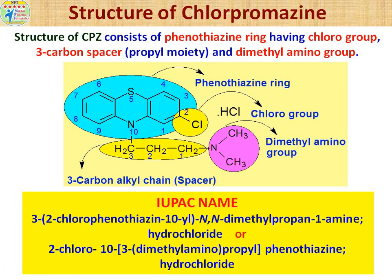For the second IUPAC name, more priority is given to the phenothiazine ring. The chloro group at position 2 gives '2-chloro'. At the 10th position of the phenothiazine ring, the propyl moiety is present; numbering starts from the carbon directly attached to the ring as first, then second, then third — which bears the dimethylamino group — giving '3-(dimethylamino)propyl'. The complete name ends with 'phenothiazine hydrochloride'.